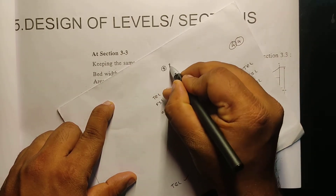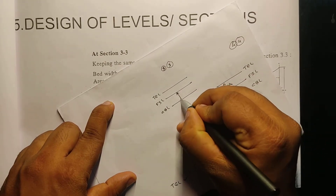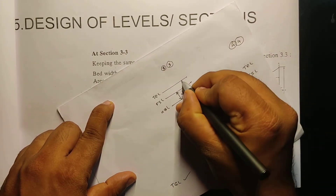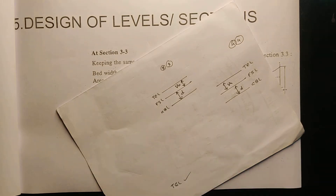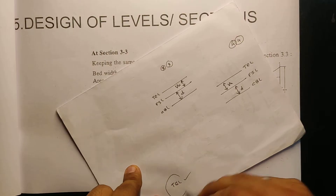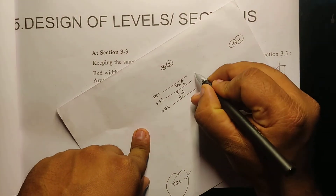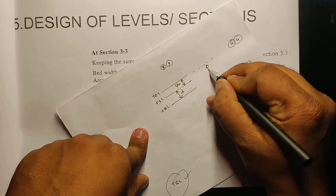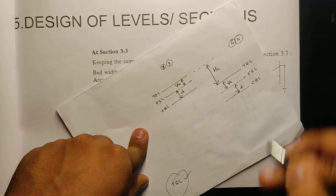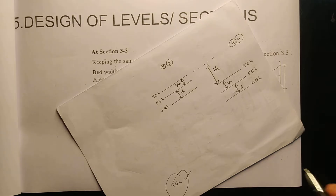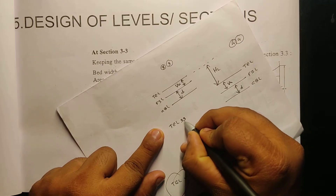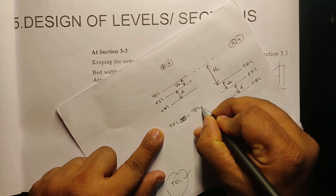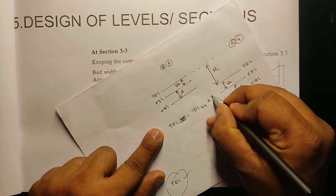Now section 3-3 will be there, and here we have the water depth. If we move up to the TL, then we move down to the total energy. Where we turn down to the end of the TL — because here we turn down to the internal section — this is the head loss.